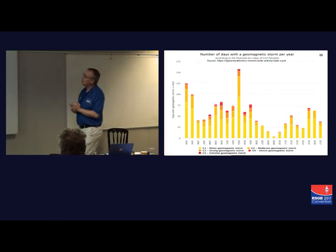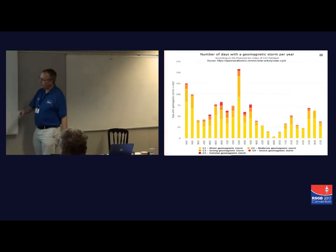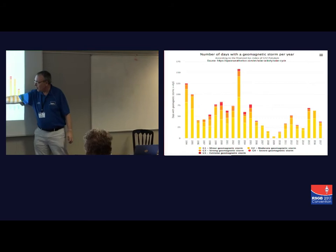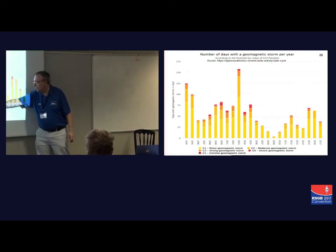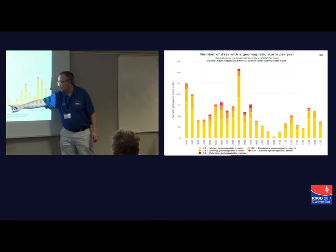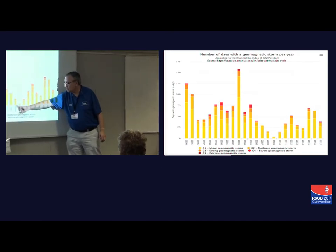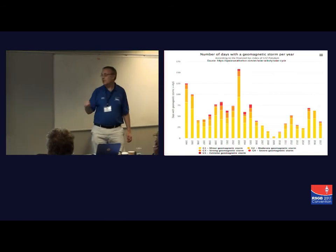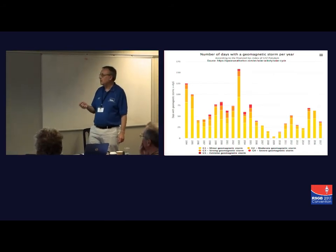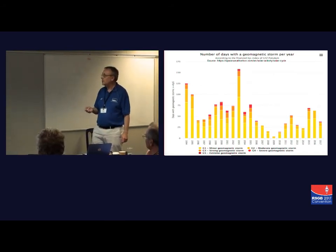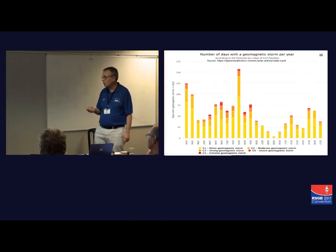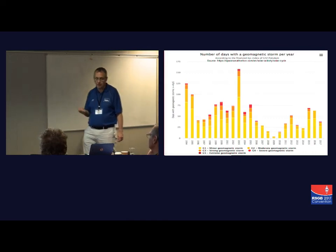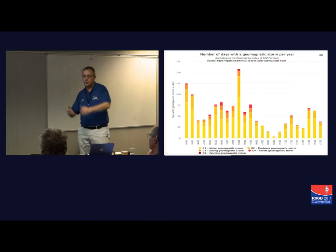Looking at the number of days with geomagnetic storms per year, during that period of solar minimum you can see that those two years around solar minimum we were still getting disturbed conditions in 2008. This says to me that 2018 is not going to be terribly good in terms of geomagnetic storms caused by coronal holes, and it may be right through into 2020 before we start seeing much of an improvement.